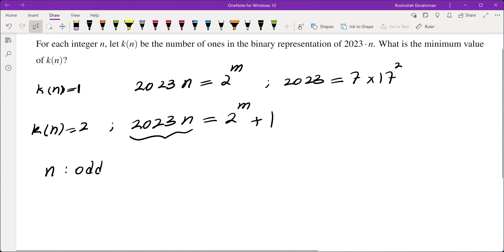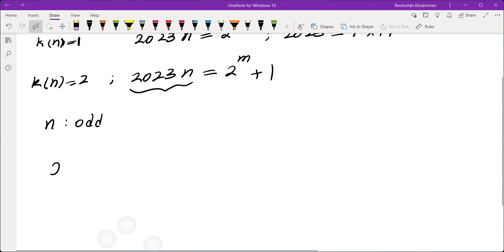Now, is this possible for 2023n to be 2 to the power of m plus 1? What that means is we need 2 to the power of m plus 1 to be 0 mod 7, and also 2 to the power of m plus 1 to be 0 mod 17 squared. Okay, let's see if that's possible.